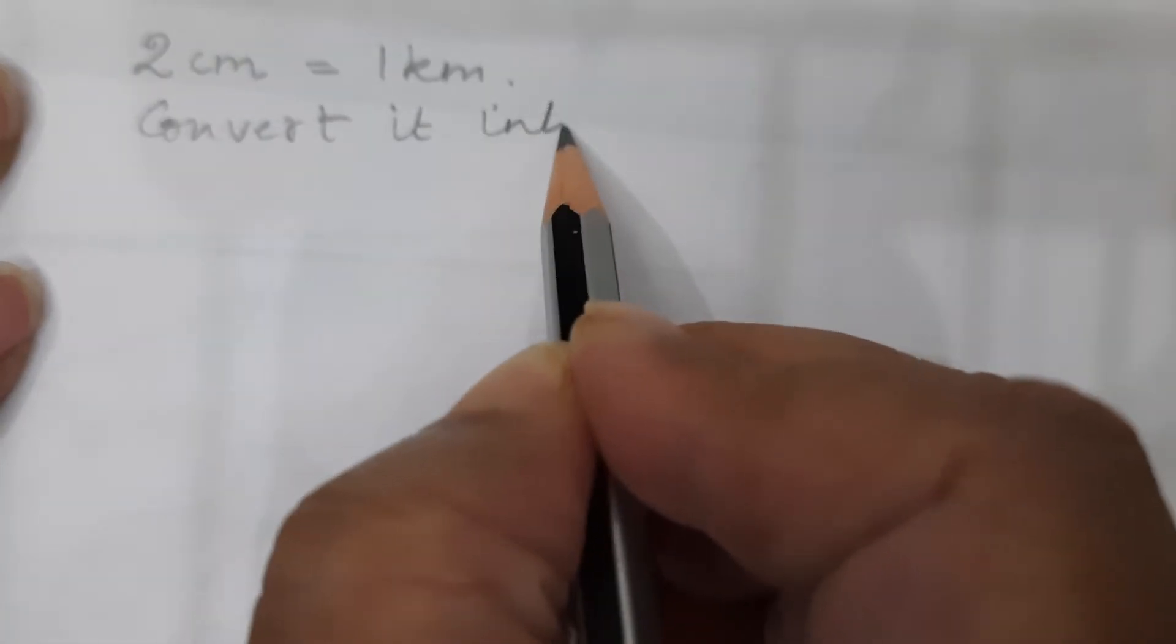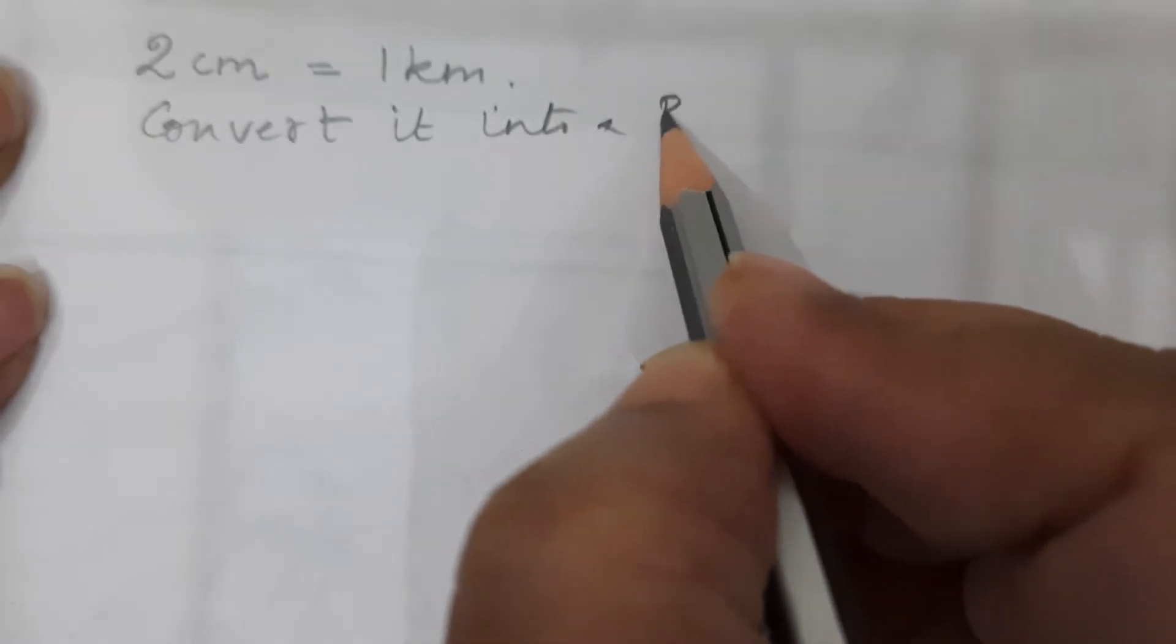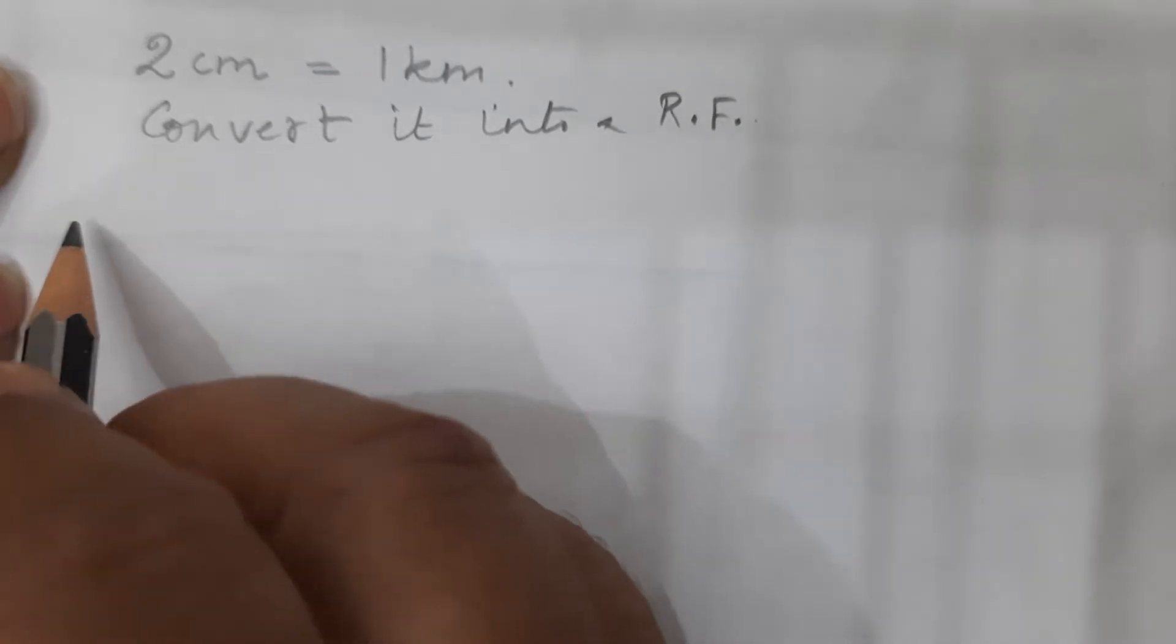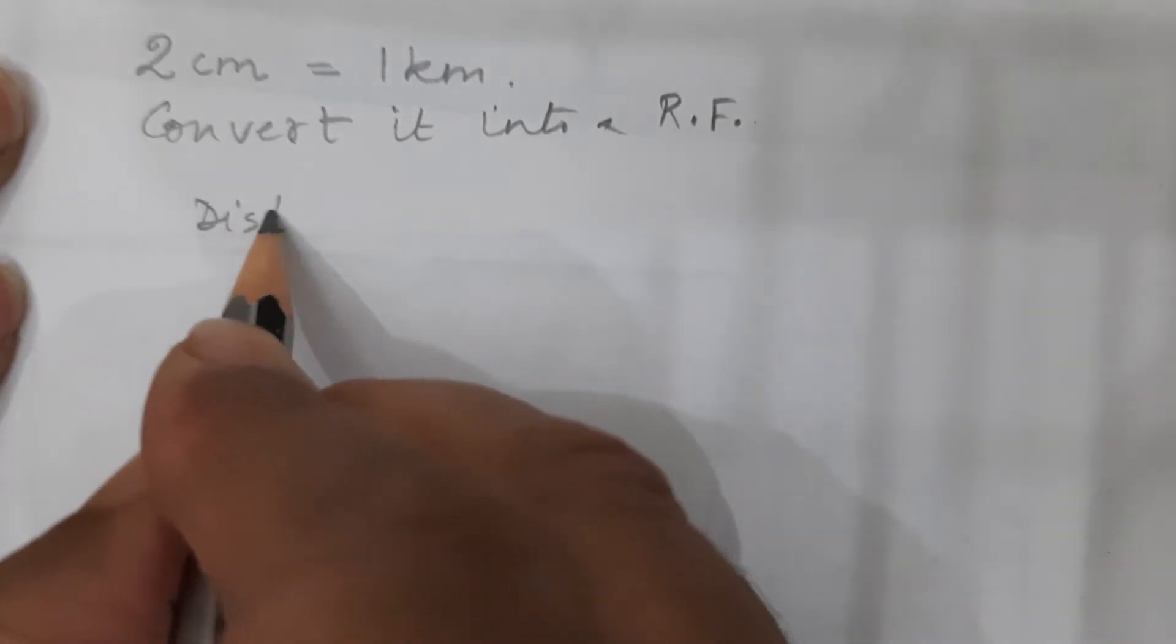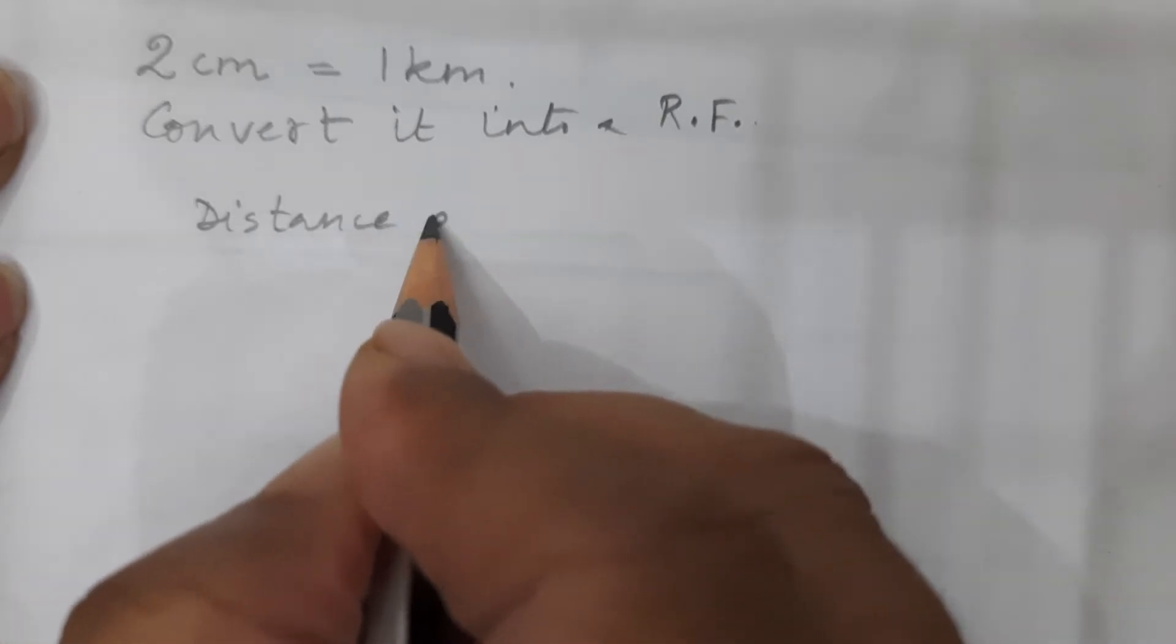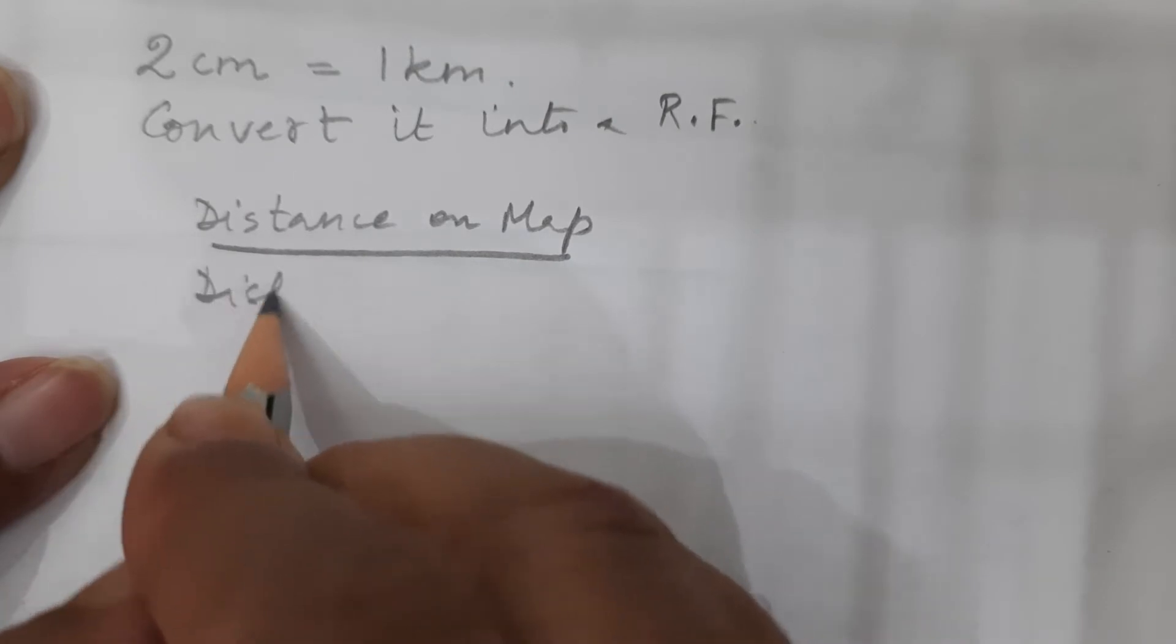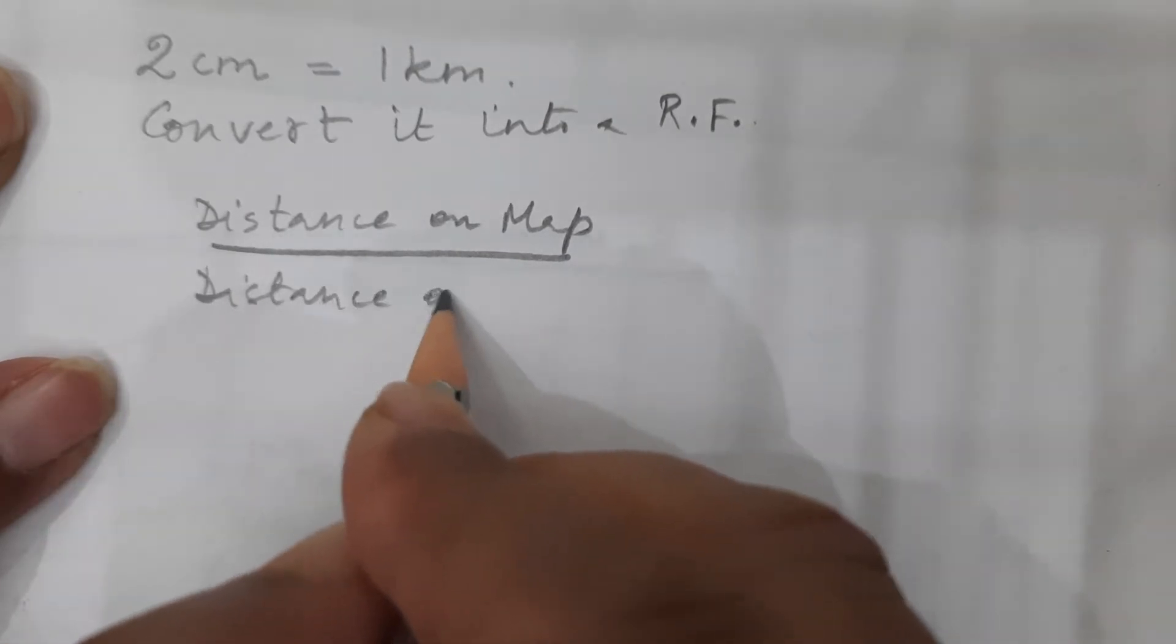Now how to convert? Now we are going to convert this same ratio which is there in this statement. I am going to convert it into a representative fraction or RF. Now what is the formula that we had seen of an RF is distance on map upon distance on ground.